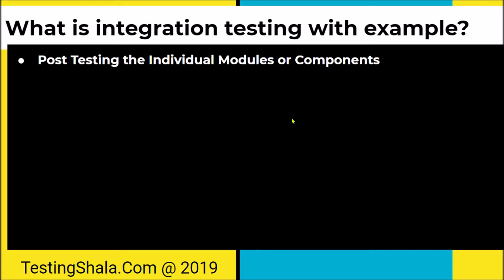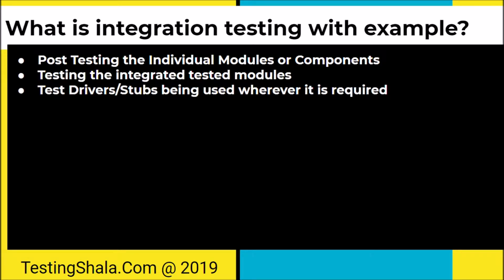Integration testing is normally done when unit level testing is complete. Unit level testing is testing at the module level or at the component level. Once individual modules or components start working, we will be integrating them using test drivers and stubs. Stubs are used when some modules are not completely implemented yet, as an alternative when we are integrating multiple modules together to form a bigger module.